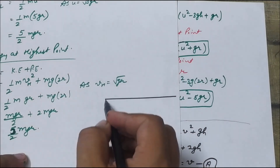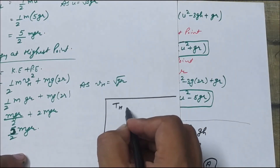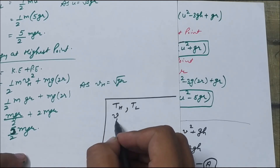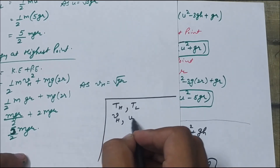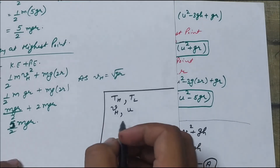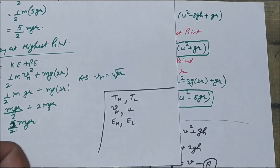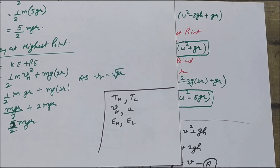So that's all students. This is how we have evaluated tension at the highest point, tension at the lowest point, instantaneous velocity at the highest point and velocity at the lowest point, along with energy at both points. If you have any query in this concept you can ask in the comment section. Keep supporting us by liking and sharing our content and do not forget to subscribe to our channel. See you again in the next video — till then, God bless you everyone.